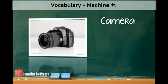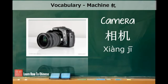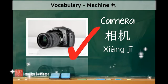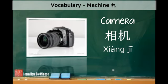The last one is camera. A camera is called 相机. 象 means photo, and 机 is machine. So, together, you get photo machine.